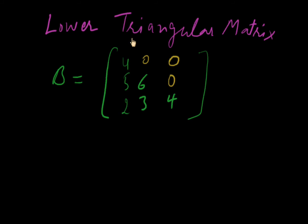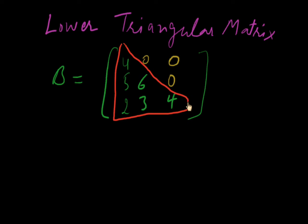In matrix B, we can see it is making a triangle on the left side of the numbers. In the first row there is only one element, 4. In the second row there are two elements, 5 and 6. In the third row there are three elements, 2, 3, and 4. So this makes a triangle, and therefore this matrix is a lower triangular matrix.